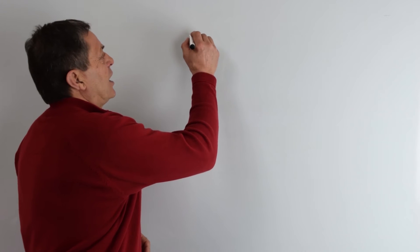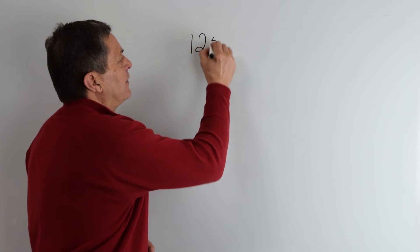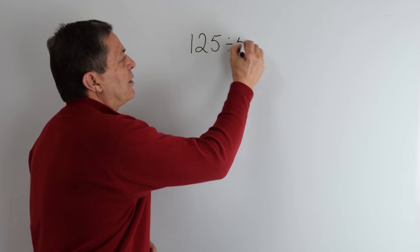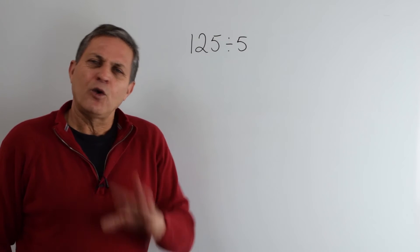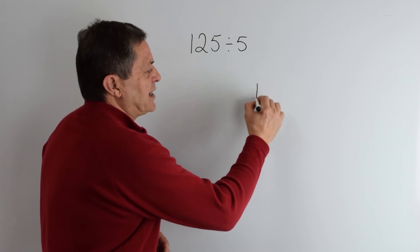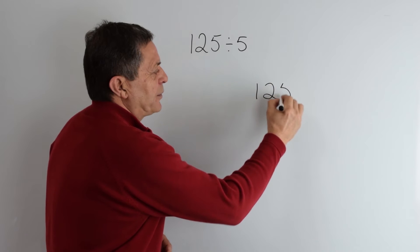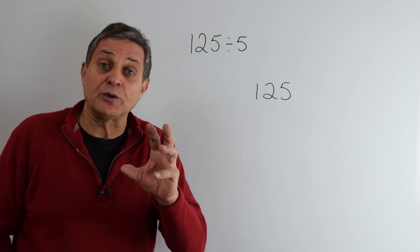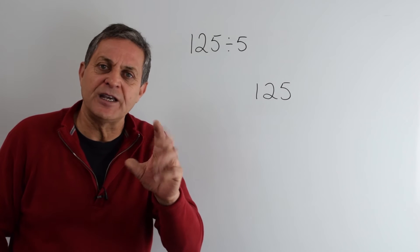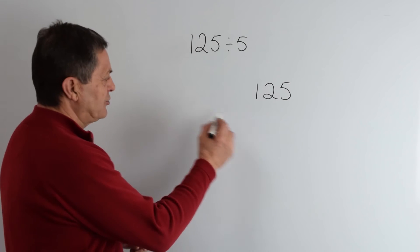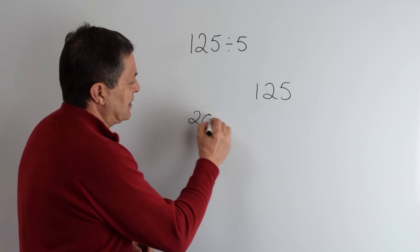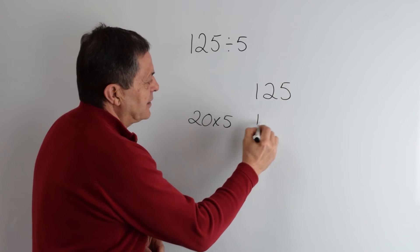Let's take that 125 divided by 5. Well, we start off by writing the number down that we want to chunk up. And we know our simple multiple, 10 times 5 is 50, so 20 times 5 is 100.